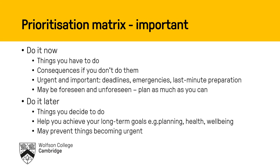Let's unpack that matrix a little bit more, looking at the top row first — the important tasks. First of all, the important and urgent things. These are things we have to do now because there'll be consequences if we don't. These are things we may have put off — particular deadlines for a piece of writing we have to submit. We have to meet that deadline otherwise we don't get it to our supervisor, and there may be an impact there.